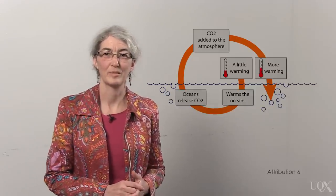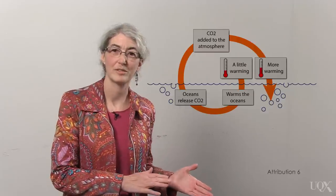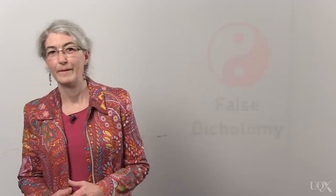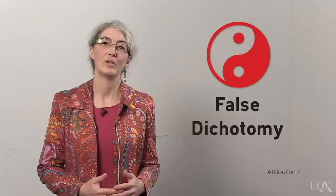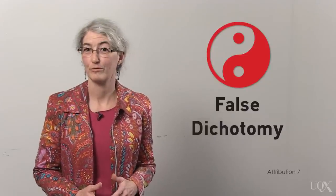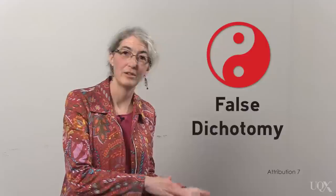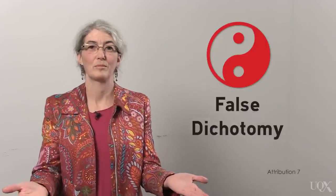Confusion about the ice core record has spawned the myth that because warming caused CO2 to rise, CO2 cannot cause warming. This myth is an example of a false dichotomy, also known as a false dilemma. The dilemma is false because it's not a case of either or. Both things can be true.